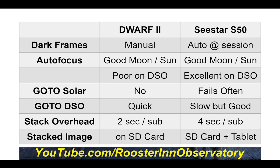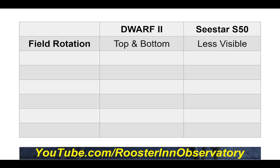At the end of the night, the stacked image on the Dwarf is saved to the SD card. The Sea Star saves the stacked image to both the SD card and whatever tablet or smartphone you're using to control it. On field rotation: when used in Alt-Az mode, field rotation is more visible on the Dwarf 2 because the frame is much wider than it is tall. The vertical orientation on the Sea Star makes field rotation a lot less visible — it has not been obvious on any target I've imaged over the past three weeks.